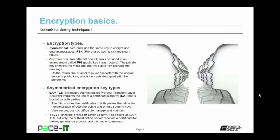In symmetrical encryption, the pre-shared key, or PSK, is used. In asymmetrical encryption, the private key encrypts the message and the public key decrypts the message. On the return side, the original receiver encrypts with the original sender's public key, which then gets decrypted with the private key. In this arrangement, the private key cannot decrypt what it encrypted, and the public key cannot decrypt what it encrypted — so it only works if there are two separate keys.